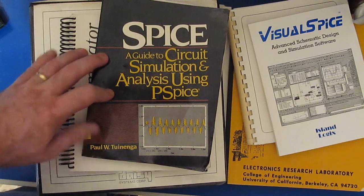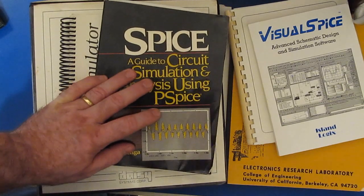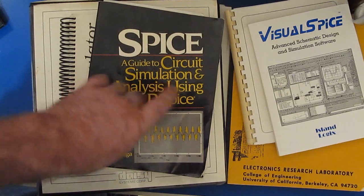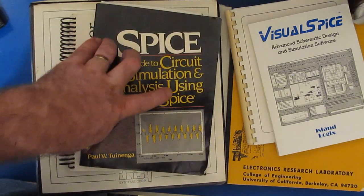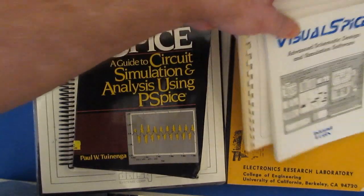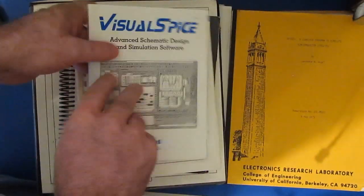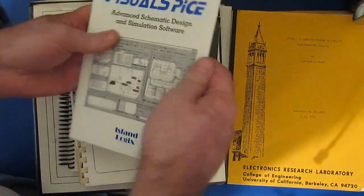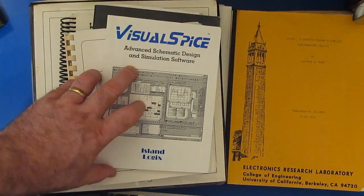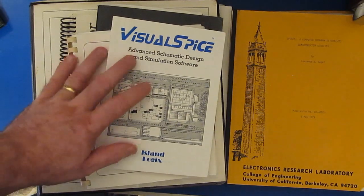MicroSim sold PSPice to Orcad eventually. They still offer that tool today. I went out to their website a couple of days ago just to check. The current price for it is about $6,800 without tax. For home use I did buy a couple of cheap low cost Spices. There's this one here called TurboSim. And then later that same company produced Visual Spice. These were actually pretty nice for what they were. I think the cost on these was about $50.